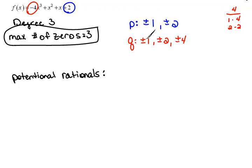Now our potential rationals are all the combinations of P's over Q's. So I'm going to start off with the 1, and we're going to put it over each one of the Q's. So that would be 1 over 1 is plus or minus 1. 1 over 2 would be plus or minus 1 half. And then 1 over 4 would be plus or minus 1 fourth. So now I'm done with the 1. I've used all those combinations.